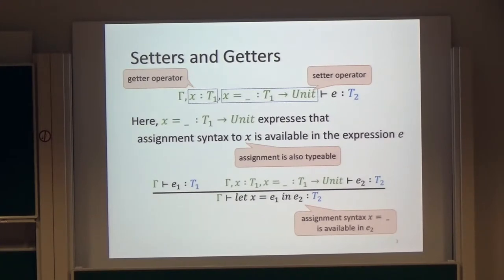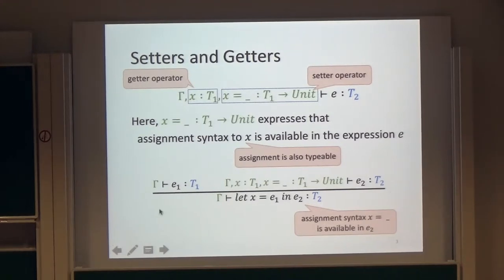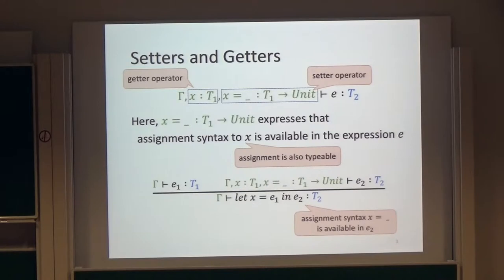By introducing this idea, we can naturally define the meaning of let expressions. A let expression can be typed under gamma if the expression E2 can be typed under gamma, X colon T1 and X colon X equal underscore. This notation also expresses that getter X and setter X equal underscore are available in the expression E2.